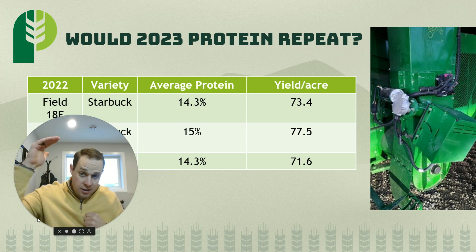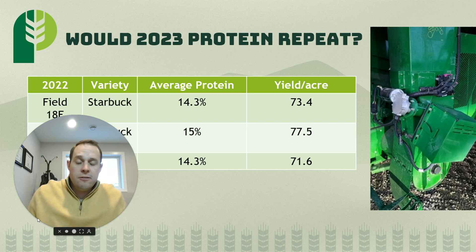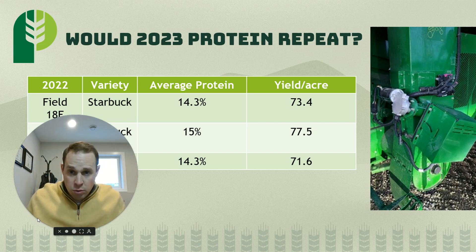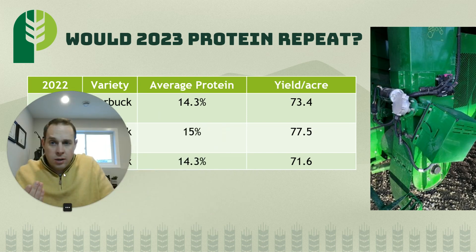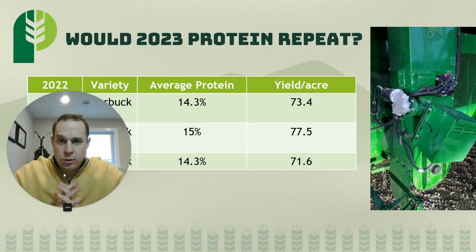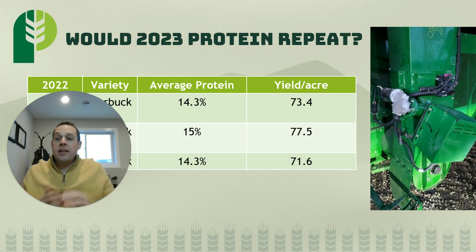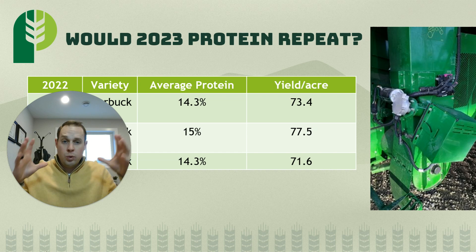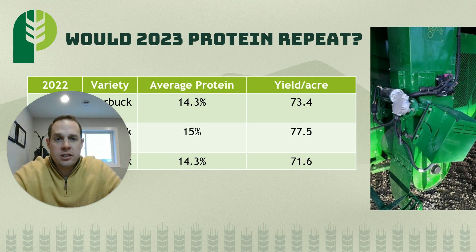After two years we're hoping to confirm what we learned: highest yield areas of the field also had the highest nitrogen and highest protein. That's the inverse of the historic relationship — low yield, high protein; high yield, low protein — but that's not what we saw in fall 2022 on these three Starbuck fields.